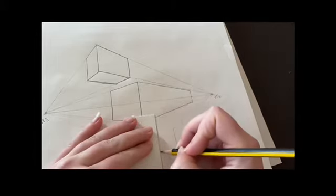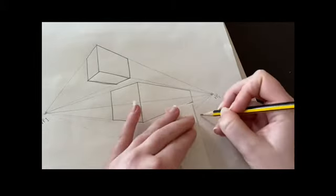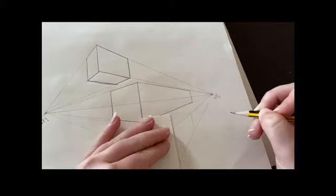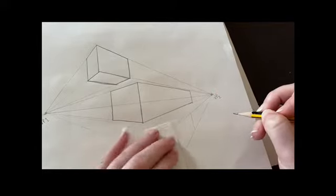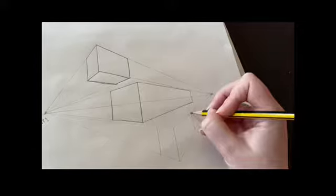Now that I've joined those to the vanishing points, I'm just going to add in my two sides that are missing, so the back edges of the box. In this case, because it's below our eye level or horizon line, we're going to be able to see the top of the box.